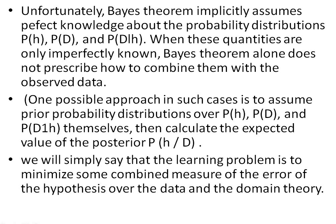Unfortunately, there is a disadvantage with Bayes' theorem: it assumes all quantities are perfectly known. When in practice these quantities are imperfect, it cannot properly combine them with the observed data, and instead gives the expected posterior probability rather than the exact posterior probability. Within these two approaches, we conclude that for the learning problem, minimizing the combined measures of error of a hypothesis over the data and domain theory is the best strategy.